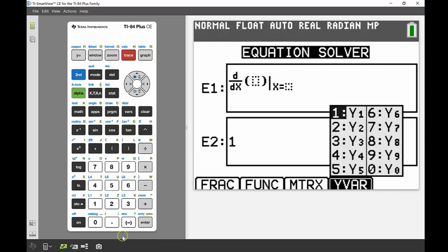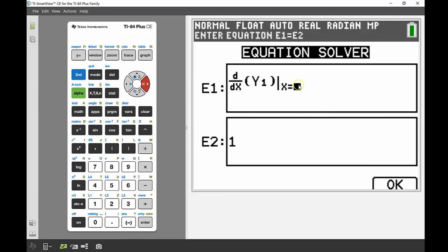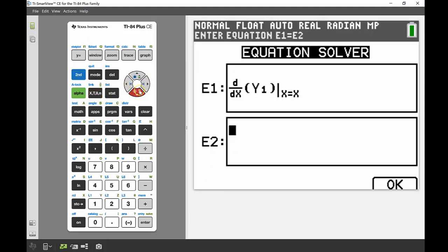The derivative of my velocity. Remembering my velocity is in y1, so my derivative of y1. I'm not sure what x is at this point, so I'm not going to define x as a specific value. I'm just going to leave it set as x. My equation 2, that's what I'm solving for, where x is equal to 1. So that's just going to be 1 there.